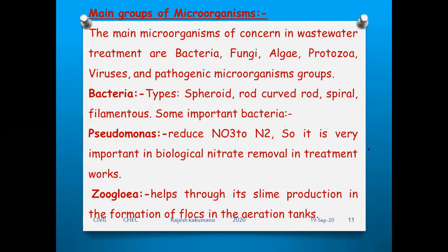The main microorganisms of concern in wastewater treatment are bacteria, fungi, algae, protozoa, viruses, and pathogens. In bacteria, the types include spheroid or rounded type, rod type, spiral or coiled type, and filamentous type — which makes the third category. These are the important bacteria types from biology.